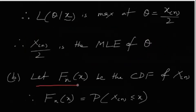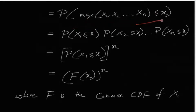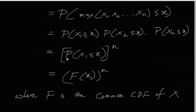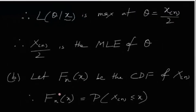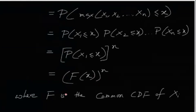Now let Fn(x) denote the CDF of X_(n). Therefore, Fn(x) = P(X_(n) ≤ x) = P(max(X1,...,Xn) ≤ x). Since the maximum is ≤ x, each Xi must be ≤ x. Since they are independent, this equals P(X1 ≤ x) · P(X2 ≤ x) · ... · P(Xn ≤ x) = [F(x)]^n, where F is the common CDF of the Xi's.